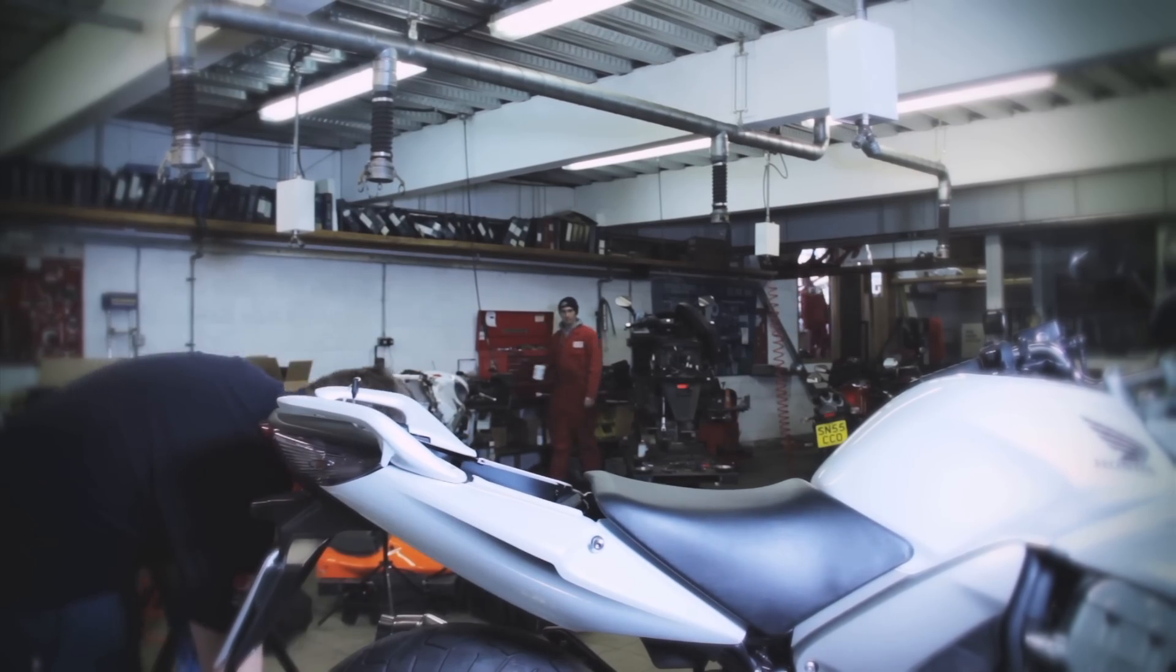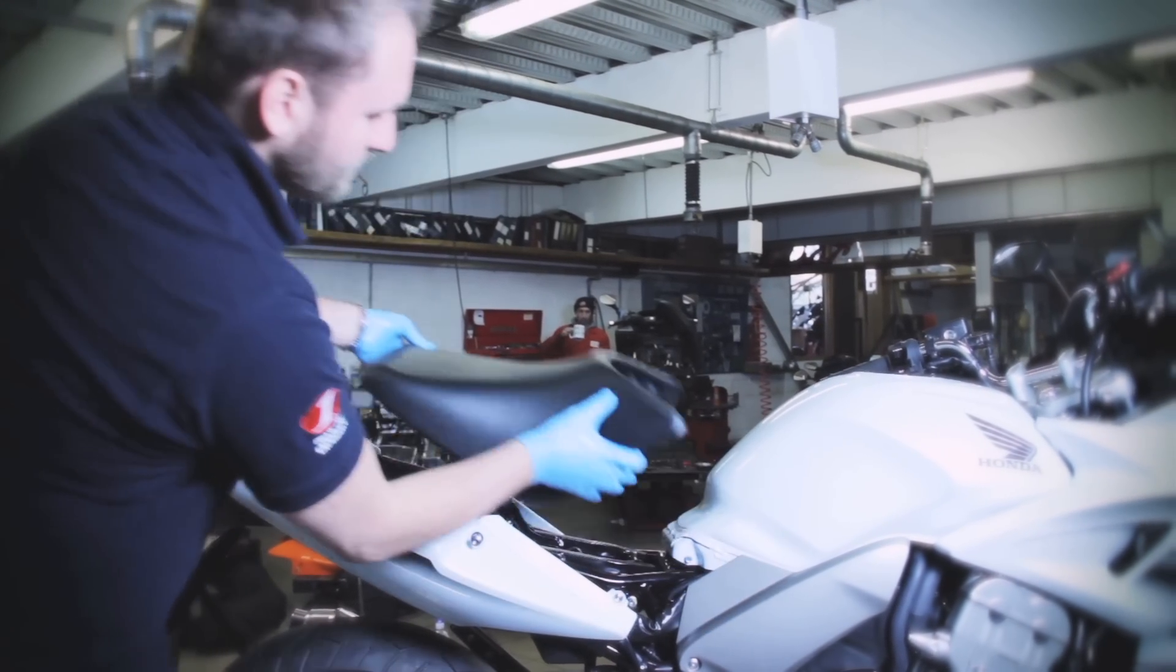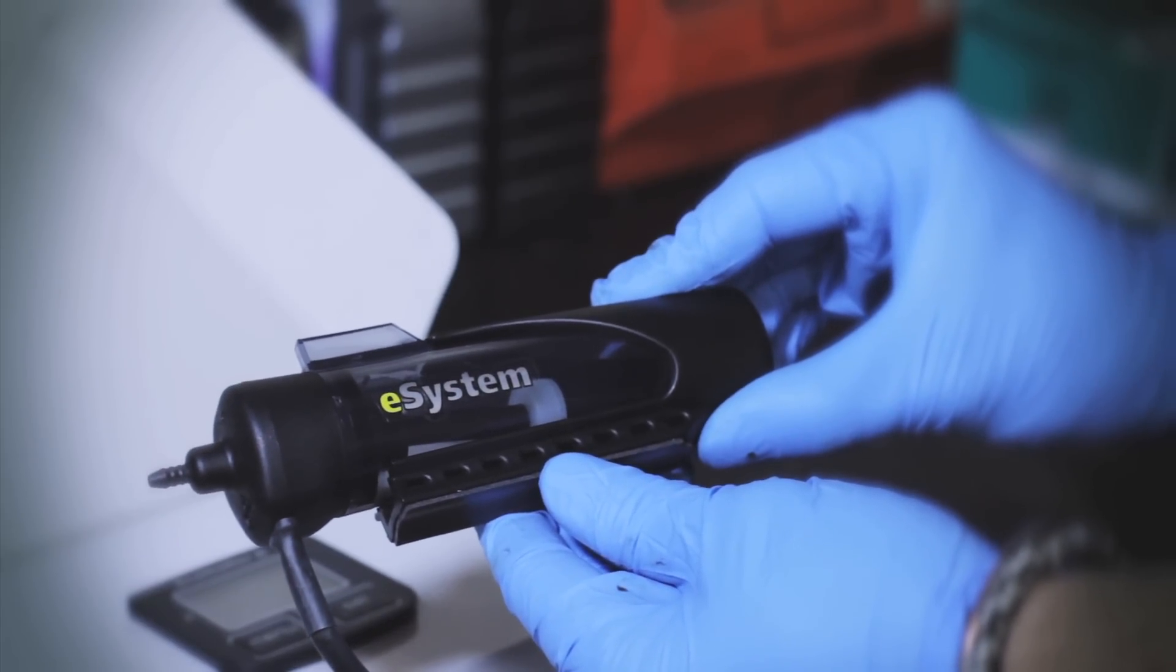The next stage is to fit the reservoir onto the bike. As with the V-System, this can either be positioned on the frame or under the seat. We are fitting the reservoir on this CBF-1000 onto the frame and behind the fairing.